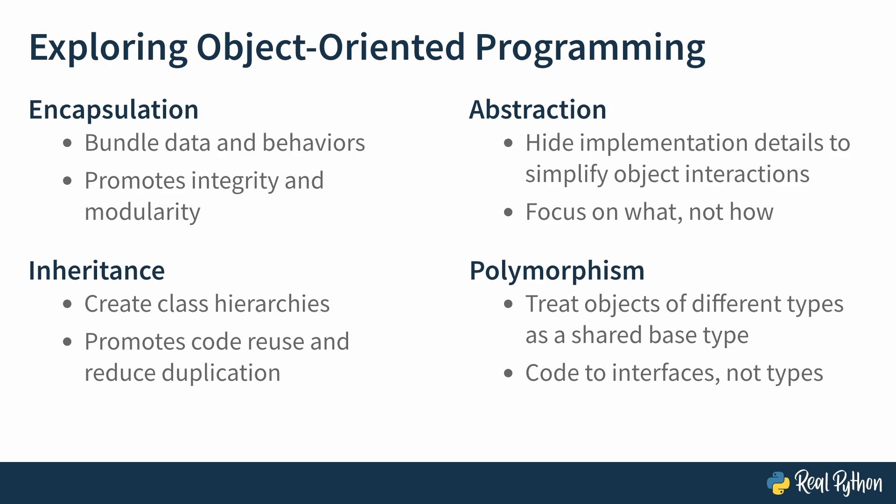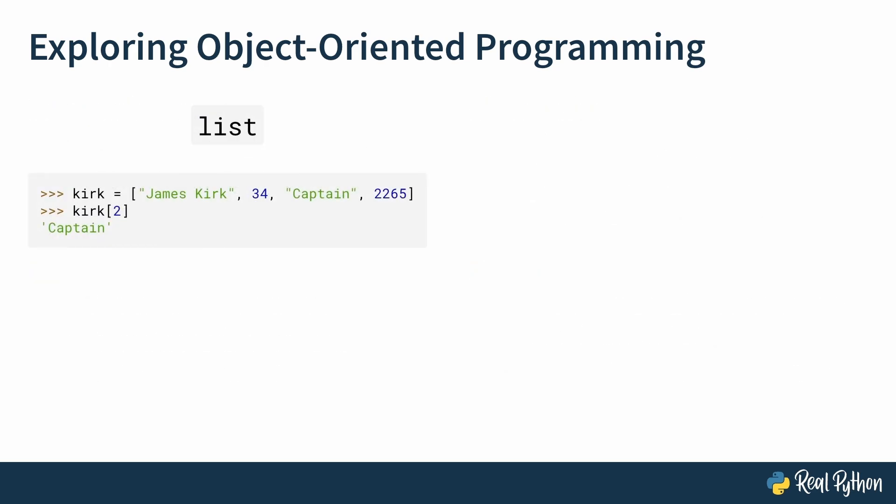That's a lot of theory, but what does OOP look like in practice? In Python, consider this example. Say you have a database of people, like officers on a ship's crew. One approach would be to use one of Python's built-in primitive data structures, like the list. It might look like this: Kirk equals a list with the values James Kirk, 34, Captain, and 2265. If you want to access Kirk's rank, you're limited to using indexes — grabbing index 2. This requires remembering the correct index and ensuring every list has the same elements in the same order. That's what makes this error-prone, hard to maintain, and difficult to scale.